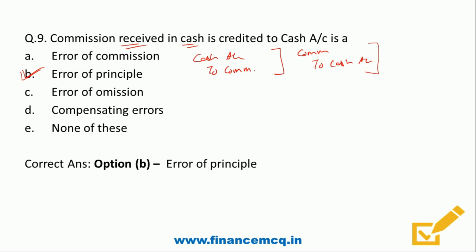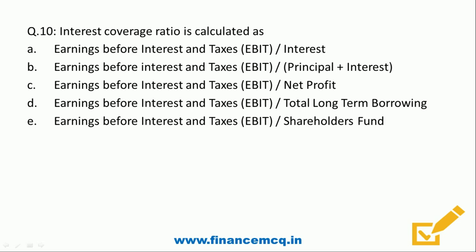Question 10: Interest coverage ratio is calculated as — A: EBIT ÷ Interest, B: EBIT ÷ (Principal + Interest), C: EBIT ÷ Net Profit, D: EBIT ÷ Total long-term borrowings, E: EBIT ÷ Shareholders' fund. Interest coverage ratio measures how much earnings a firm makes to cover its interest obligations. It is calculated as EBIT divided by Interest. The correct answer is Option A: EBIT ÷ Interest.